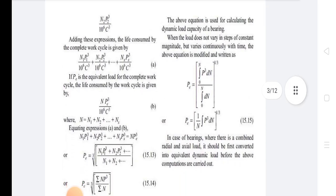The above equation is used for calculating the dynamic load capacity of a bearing. When the load does not vary in steps of constant magnitude but varies continuously with time, the above equation is modified and written as P equivalent equals integral 0 to N, P cube upon DN upon integral 0 to N DN bracket raised to 1 upon 3.